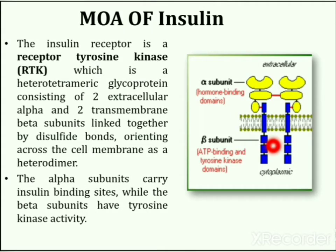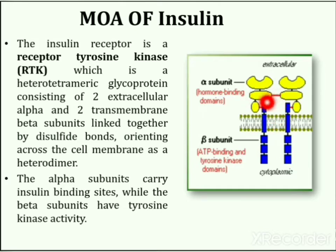This diagram is showing an insulin receptor. The insulin receptor is a receptor tyrosine kinase, in short form it is known as RTK receptor. This receptor is a heterotetrameric glycoprotein consisting of two extracellular alpha and two transmembrane beta subunits linked together by disulfide bonds. The alpha subunits carry insulin binding sites while the beta subunits have tyrosine kinase activity.